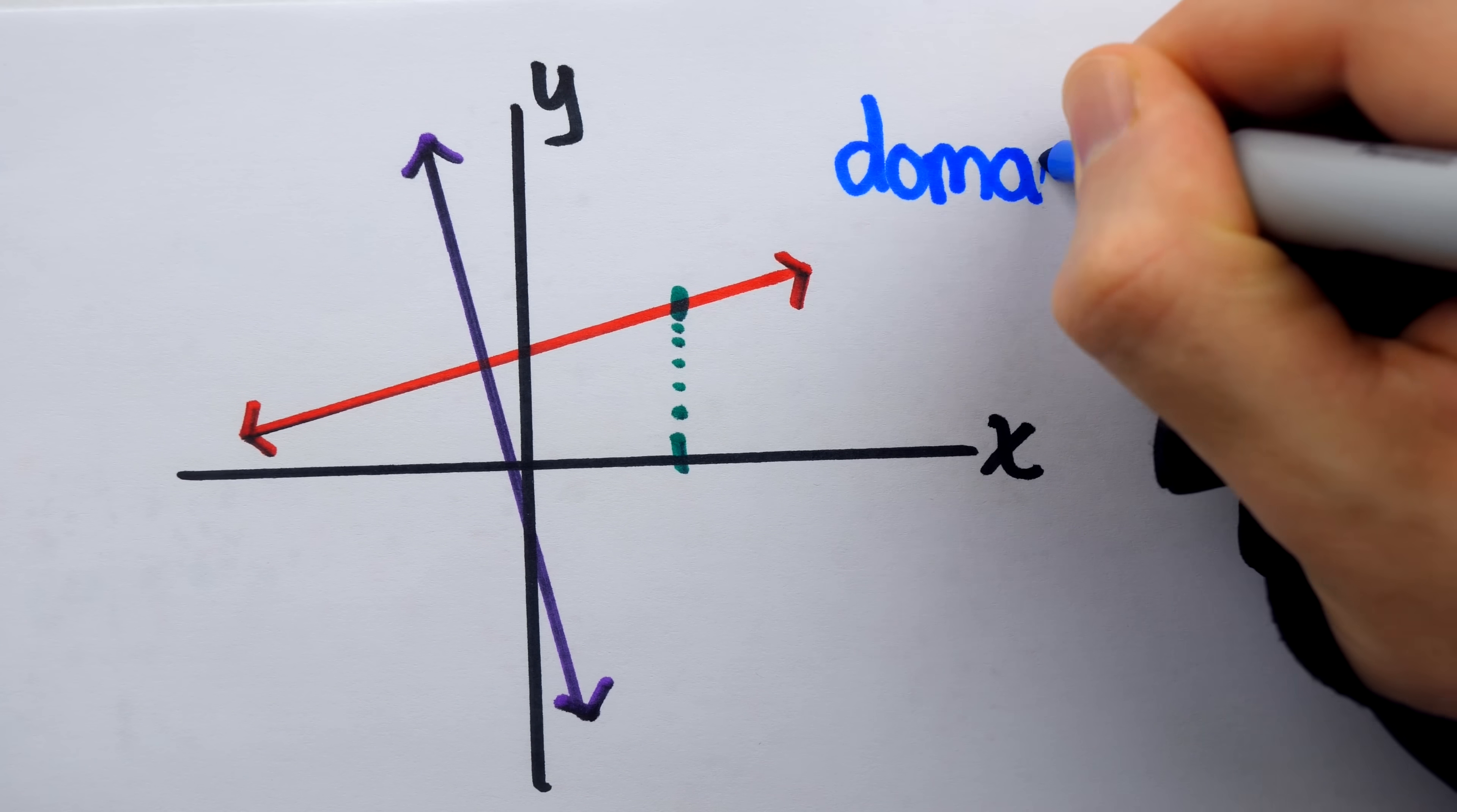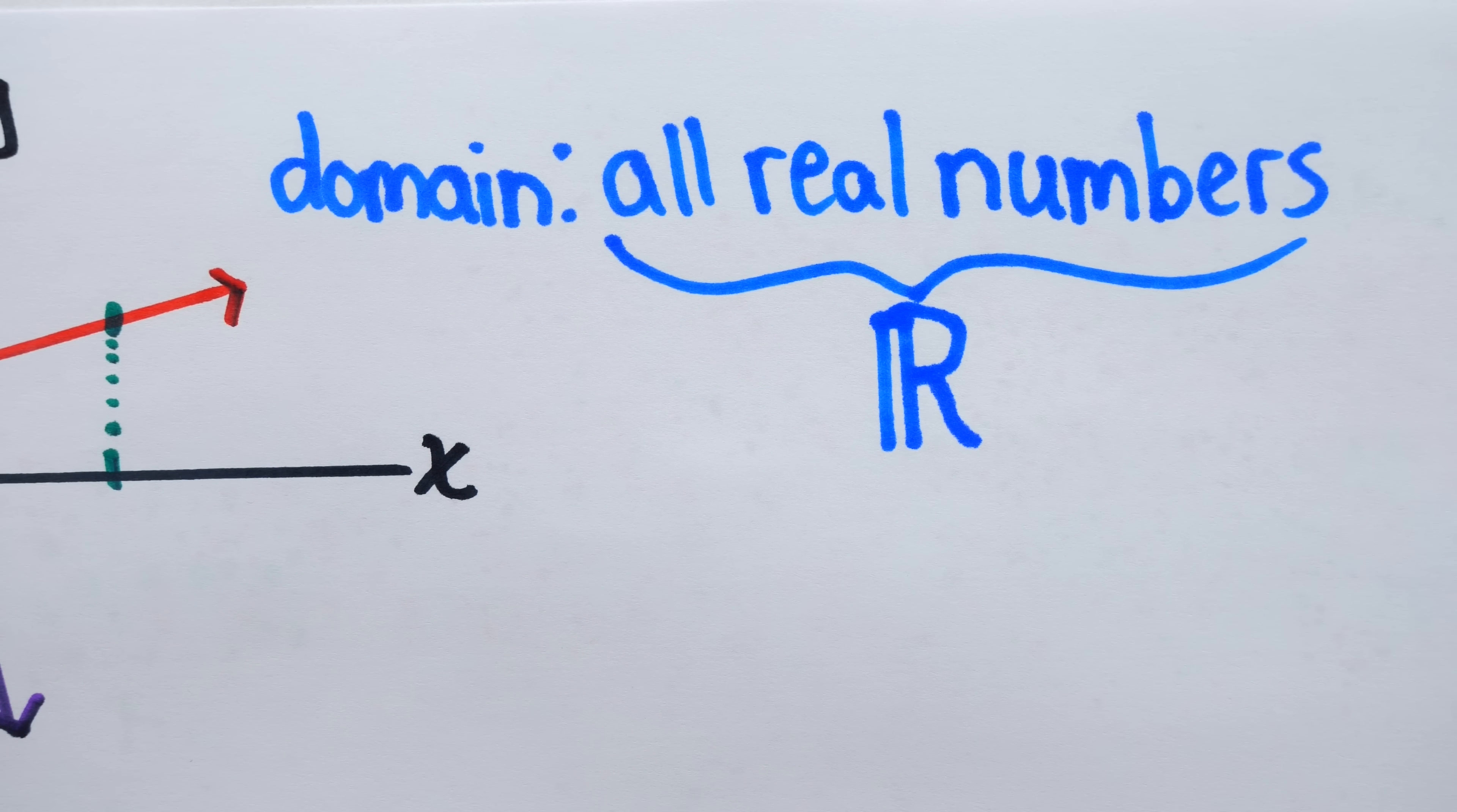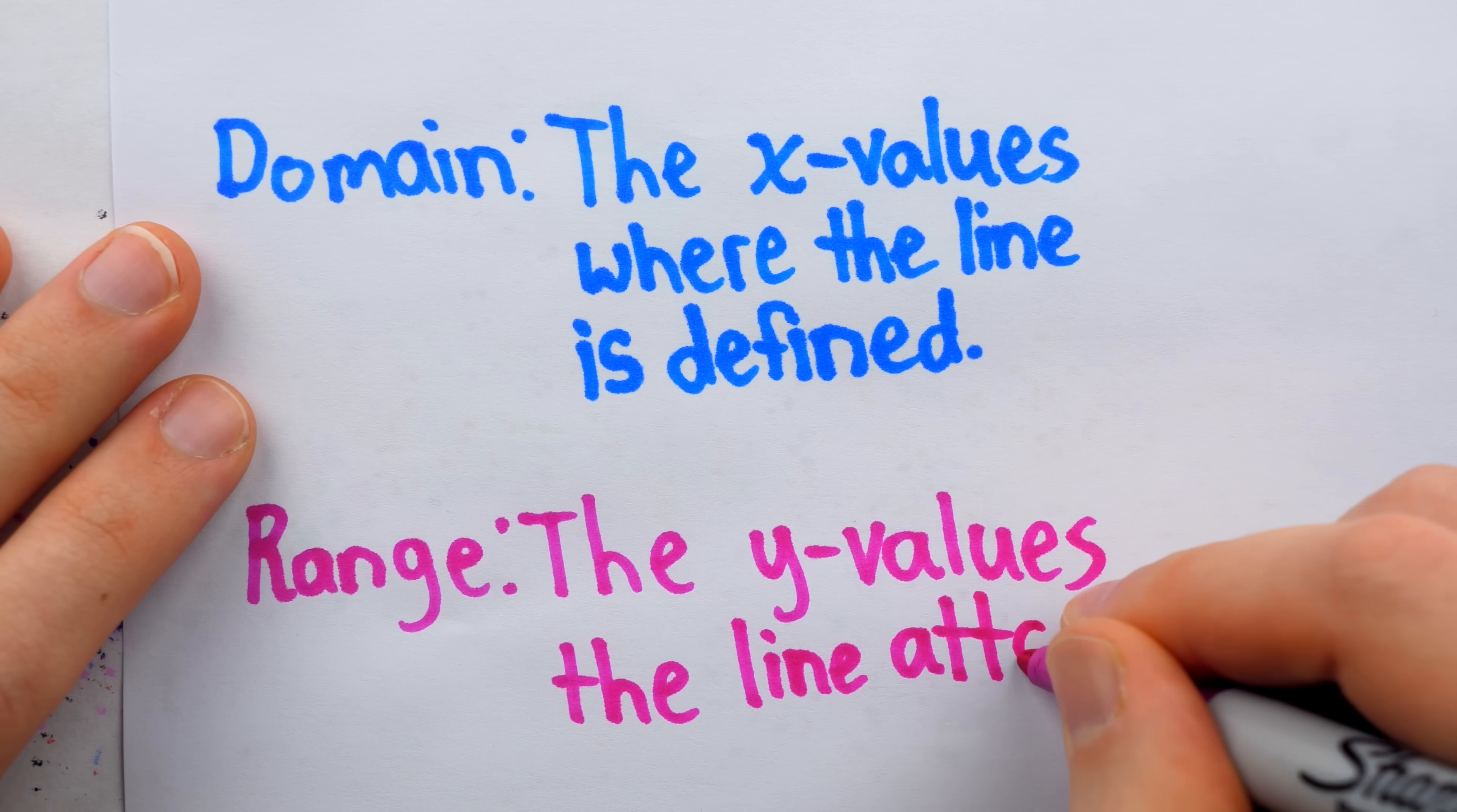We'd say the domain of each line is the set of real numbers, which you can write with a cool double stroke R like this. The lines are defined at every value of x. The range is similar,